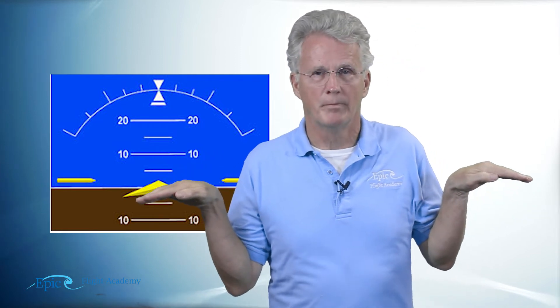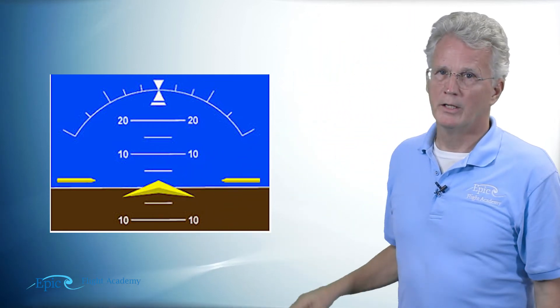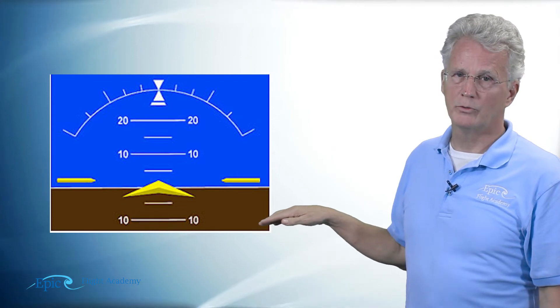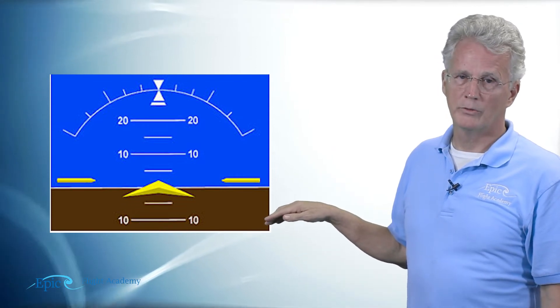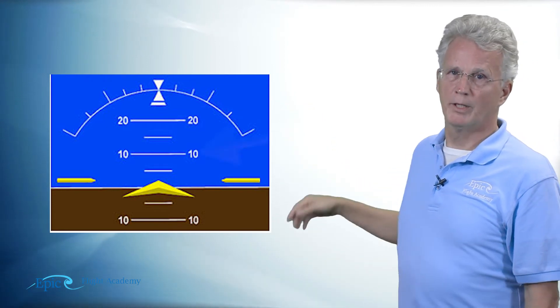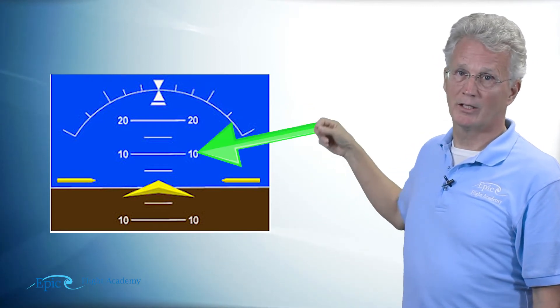The chevron is going to move up and down with pitch. As you go vertically you see a small line, big line, small line, big line. Notice the first big line says 10, the second big line says 20. Each of these white lines is five degrees of pitch.